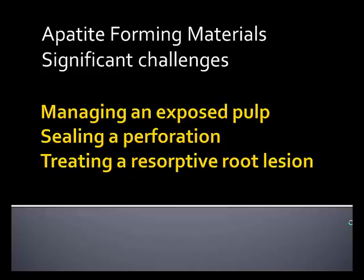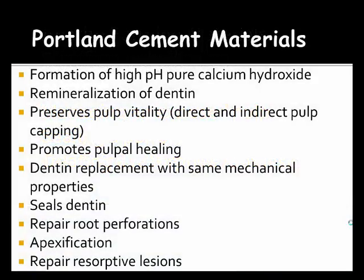These apatite-forming materials — these Portland cement materials — are known for the formation of a high pH, pure calcium hydroxide, which is our regenerative agent within the pulp. We see remineralization of the dentin; in fact, the formation of reparative dentin that, under a microscope, looks like dentin. We see the preservation of pulpal vitality with both direct and indirect pulp capping, promoting pulpal healing. The sealing of dentin, repairing root perforations, repairing resorptive lesions, and apexification have all been reported in the literature with clinical success.